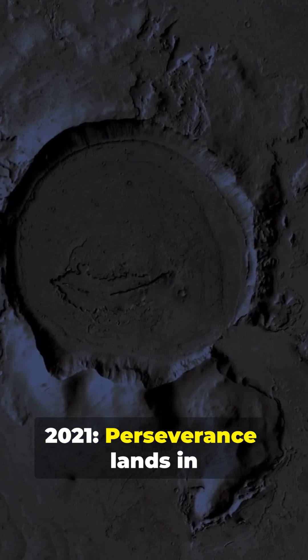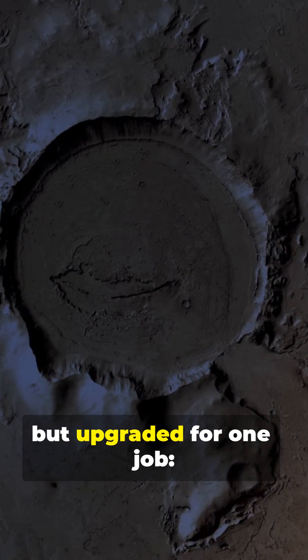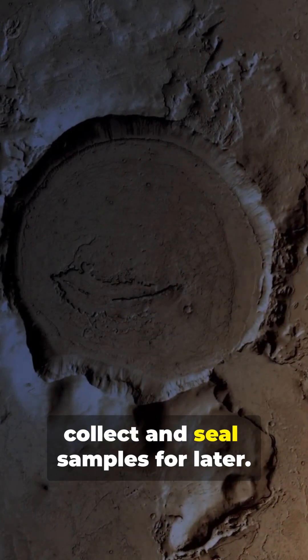2021. Perseverance lands in Jezero Crater, built on Curiosity's blueprint, but upgraded for one job: collect and seal samples for later.